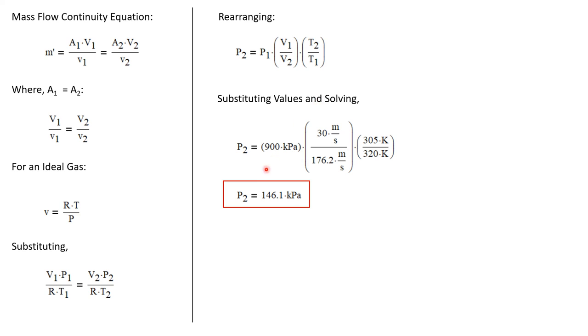Now, we have all of these values. We know the initial pressure is 900 kilopascals. And we were given the initial velocity. We just calculated the final velocity. And again,